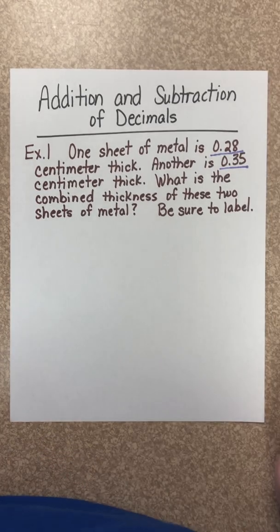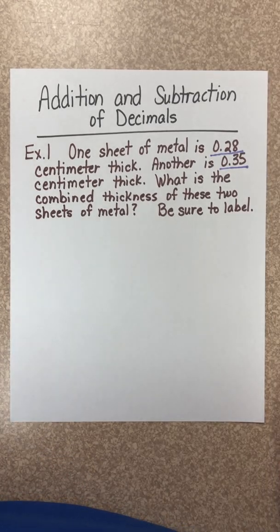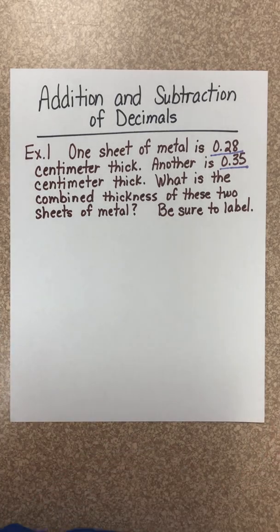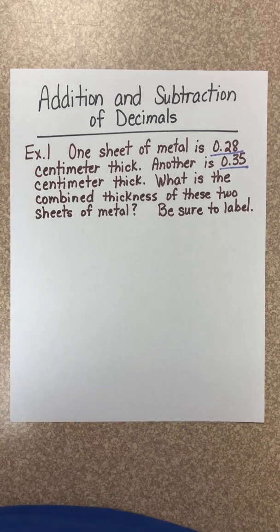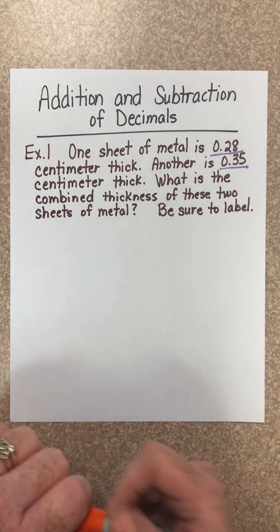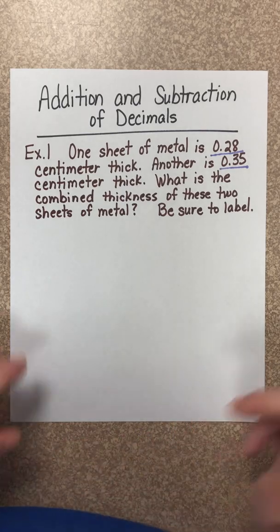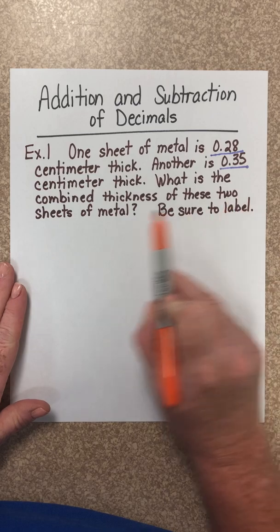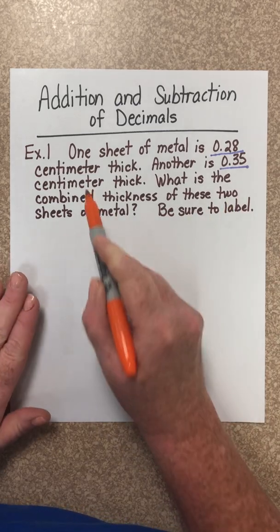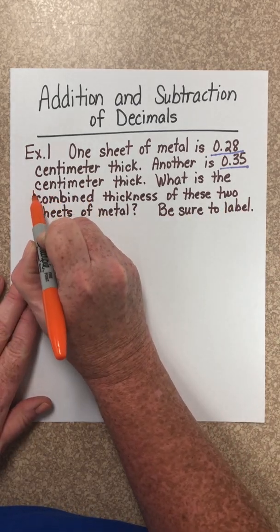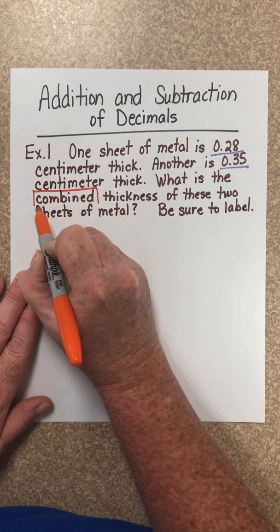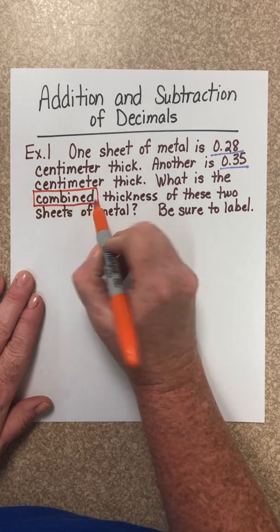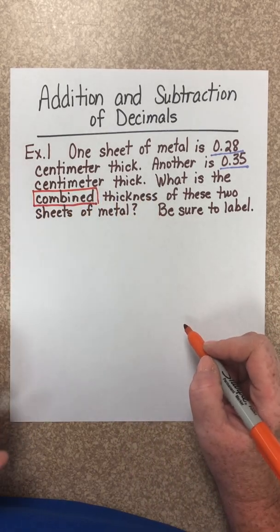Now what are we supposed to do with these two numbers? Well, this is where we need to look for our signal words. So let's look for signal words. What is the combined thickness of these two sheets of metal? Well, here's the word combined. This word tells us we are to add.